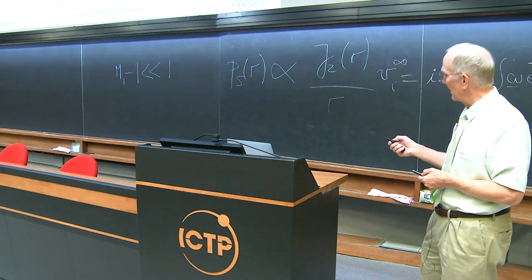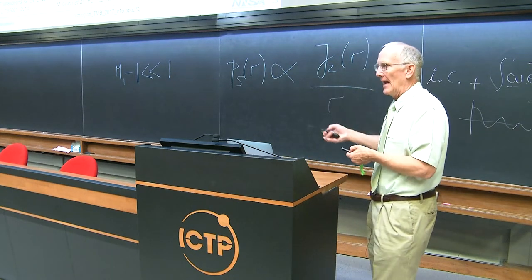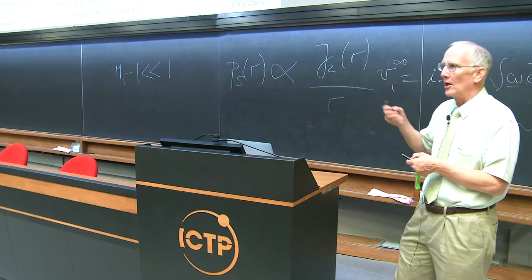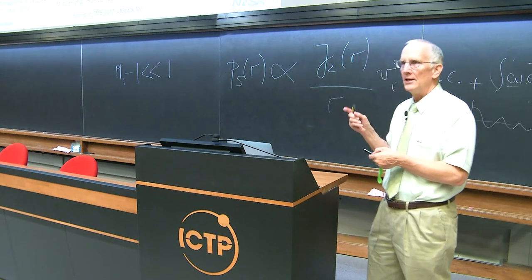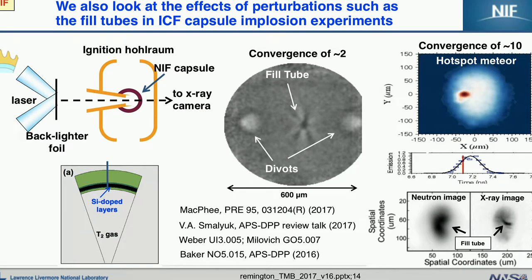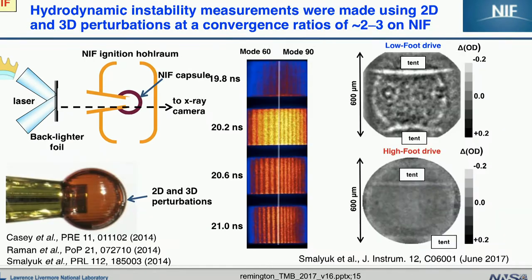In retrospect, both the effects of shadowing by the fill tube and the effects of the tent creating the scar are obvious. After the fact — after we've seen an experimental piece of data that shows it — suddenly it becomes obvious. But neither of these two effects, as large as they are in capsule implosions, were predicted. They were quickly understood after a piece of data came in. It's a nice demonstration that even in a complicated setting like a large laser, experiments still have a very serious role to play.